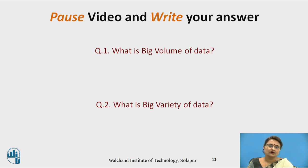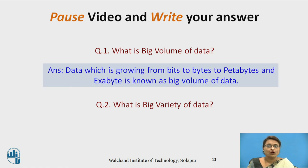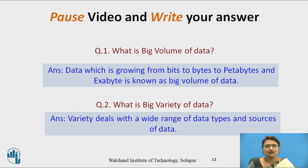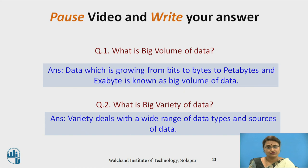What is big volume of data? It is data growing from bits to bytes, bytes to petabytes, to exabytes, to zettabytes and more — that is what we call large volume of data. What is big variety of data? Variety deals with the kind and range of data: the data types, the structures of data, and the various sources from where the data is coming.